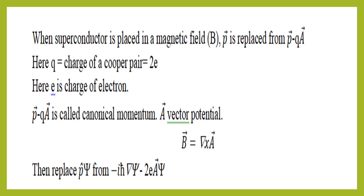When a superconductor is placed in a magnetic field B, the momentum p can be replaced by p minus QA, called the canonical momentum. Here Q is the charge of one Cooper pair and A is the vector potential, defined by B equals curl A. Then we can replace p minus QA from minus i h-bar Del Chi minus QA Chi in the equation for the kinetic energy.